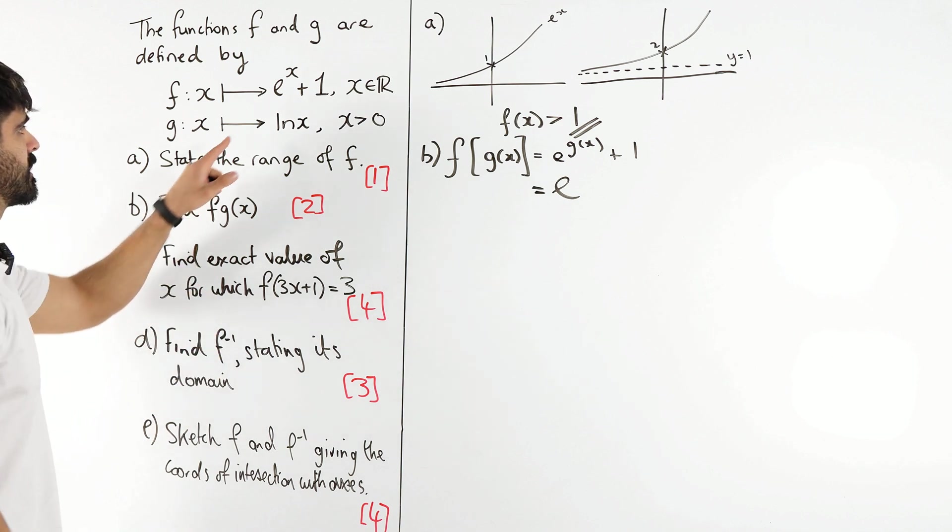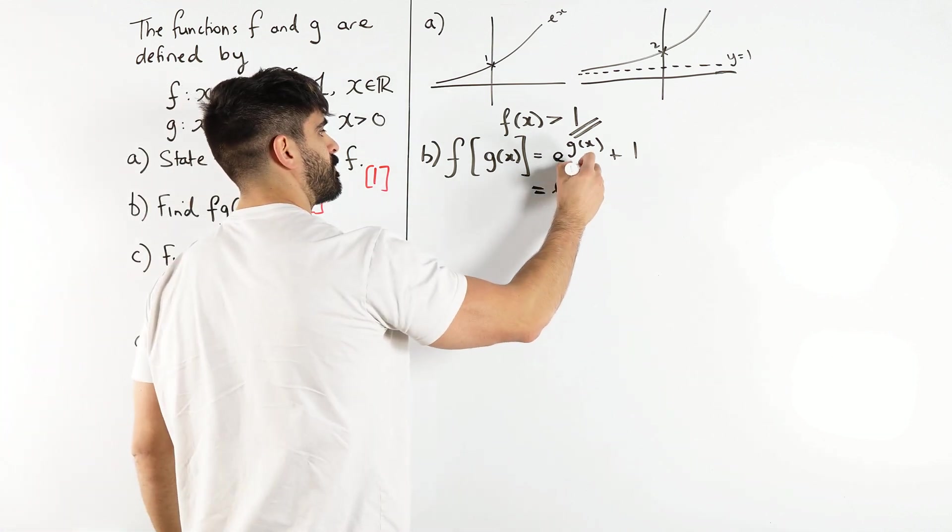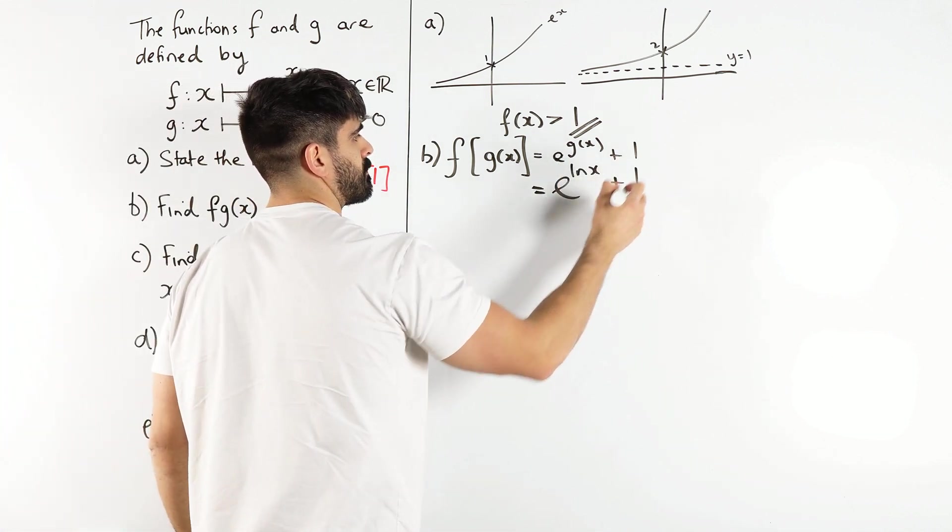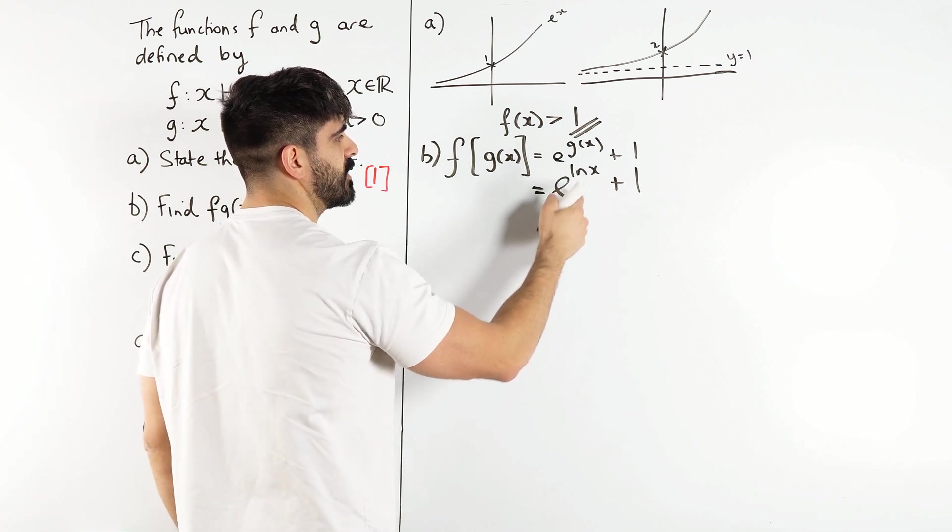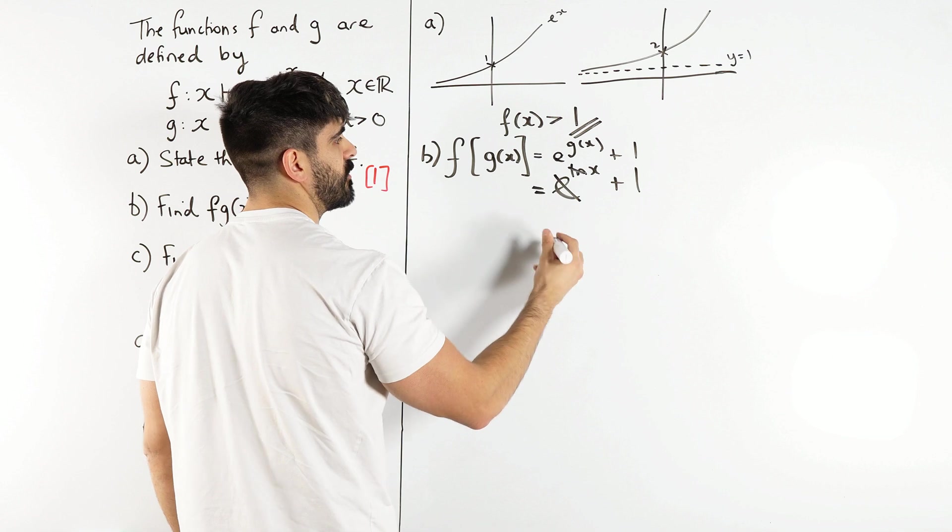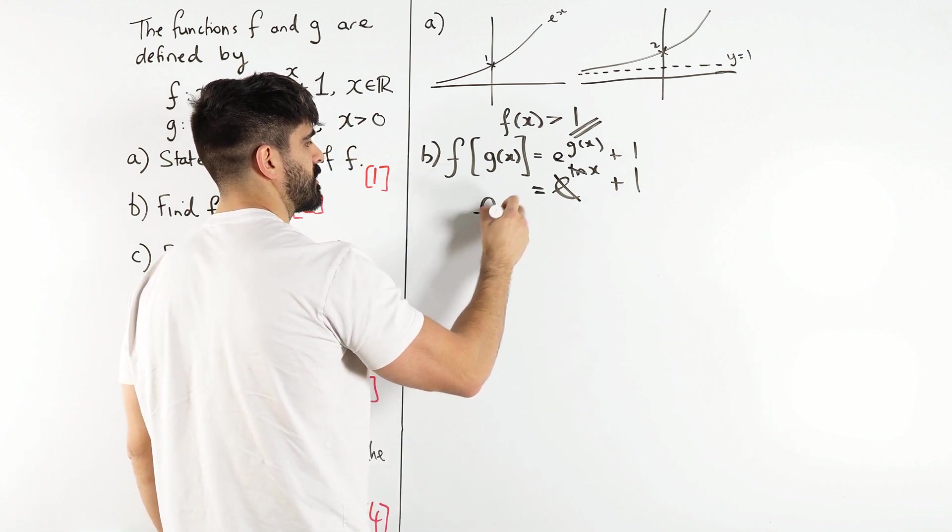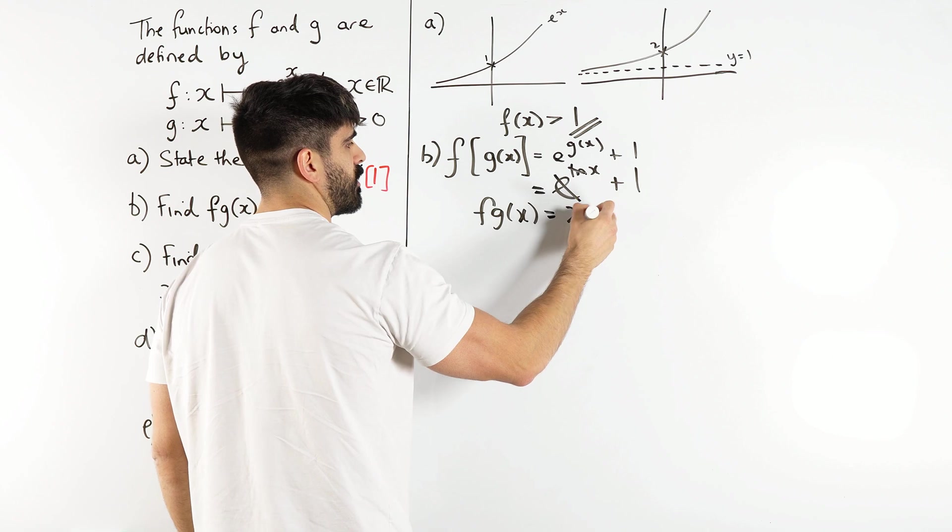But g(x) is ln(x). e to the power of ln—e and ln are inverse functions, they cancel out. And there we go, fg(x) is a very simple x + 1.